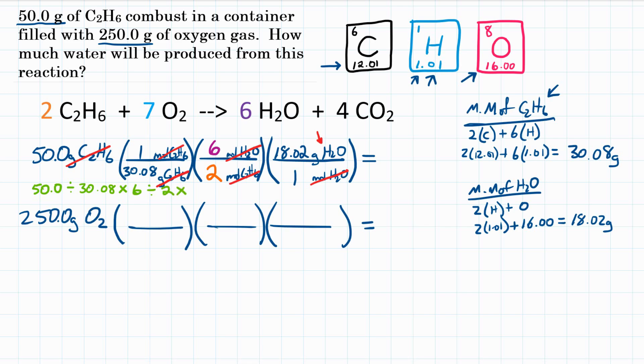Times the top of the third fraction, 18.02. We could divide by 1, but again it's not going to change it. So we can skip that and we'll hit equals. And we should get around 89.86, rounding to 89.9 grams of water. That is how much water we would produce if all 50 grams of C2H6 would react. So now we have to do this again for oxygen.